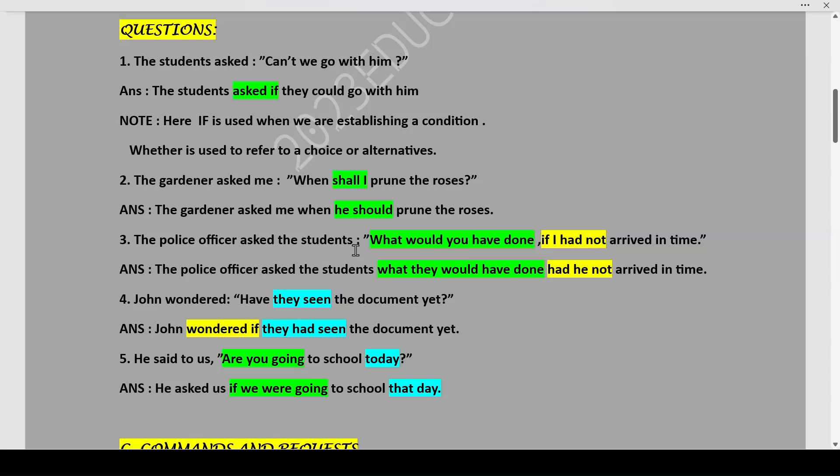The police officer asked the students, what would you have done if I had not arrived in time? The police officer asked the students what they would have done had he not arrived in time. John wondered, have they seen the document yet? John wondered if they had seen the document yet. Again, over here we are using if and not whether. Why? Because there is no alternative or choices here. It is only a conditional. So, if is used.